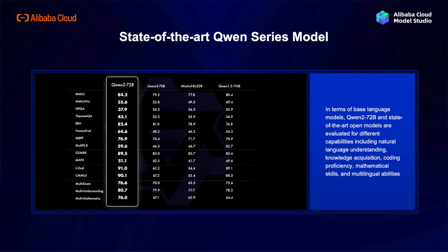In terms of models, the release of Alibaba Cloud Model Studio will bring the full Qwen model series, including the closed-source models Qwen-Max, Qwen-Plus, and Qwen-Turbo. And of course, the largest open-source models Qwen 2 series and Qwen 1.5 series will be available. Qwen 2 72 billion parameters are evaluated for different capabilities including natural language understanding, knowledge, coding, mathematical skills, and multi-language abilities, and each performance exceeds all current leading open-source models.